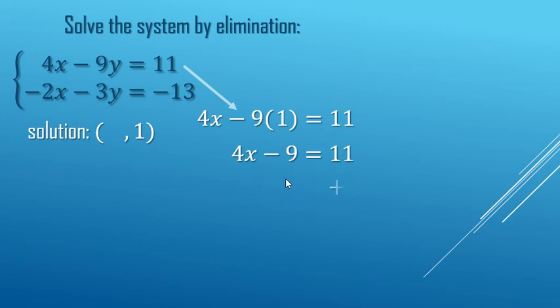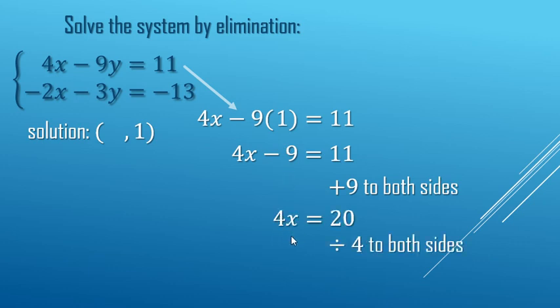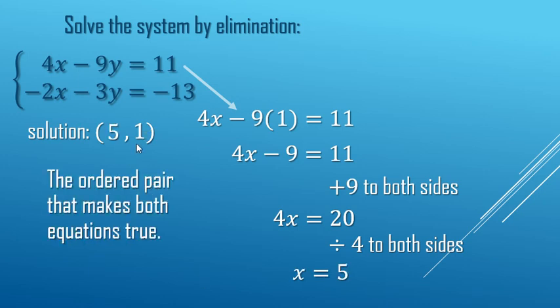Two-step equation. Start by adding 9 to both sides to undo the minus 9. And then divide by 4 to undo this multiply by 4 to the x there. And we end up with x equals 5. So 5, 1 is the ordered pair that makes both equations true.